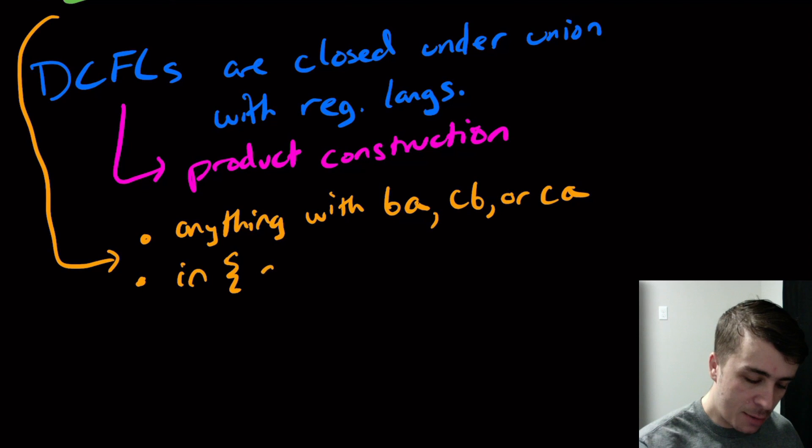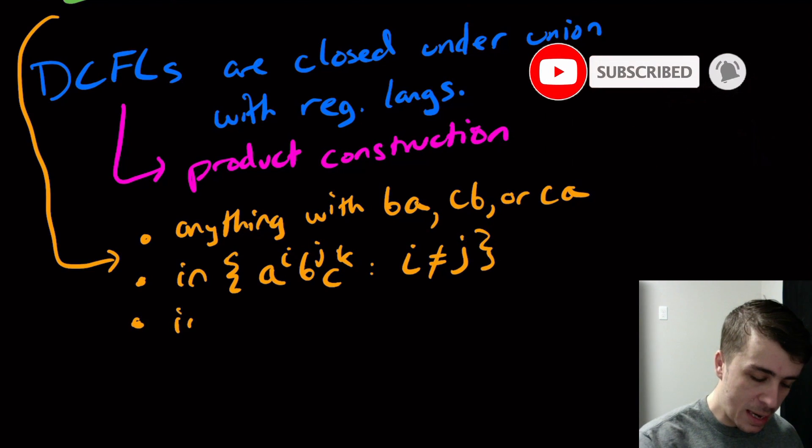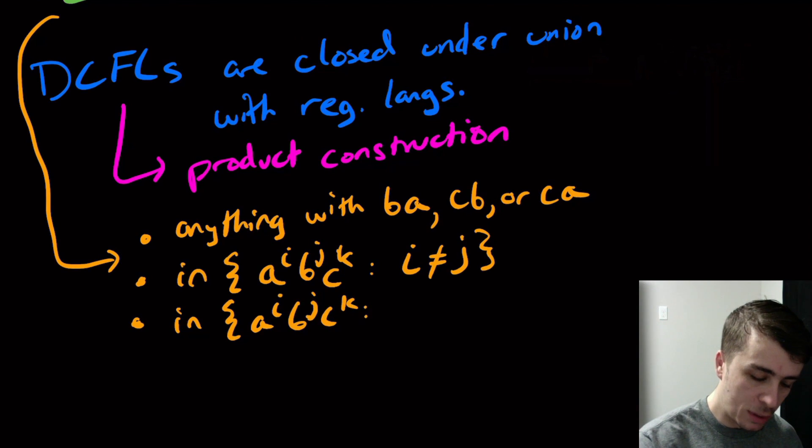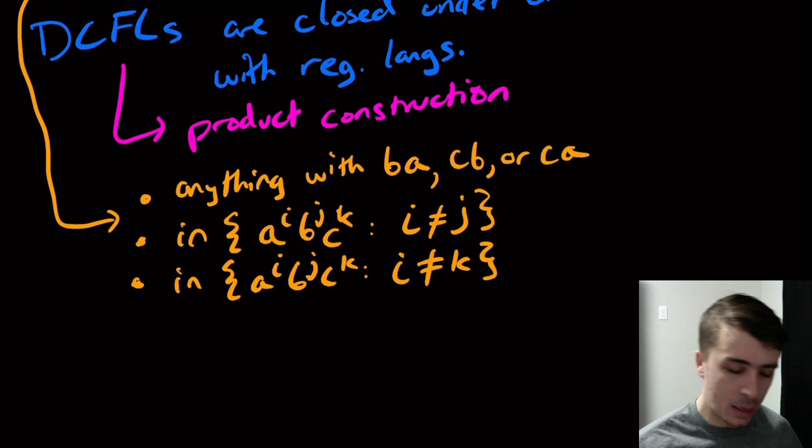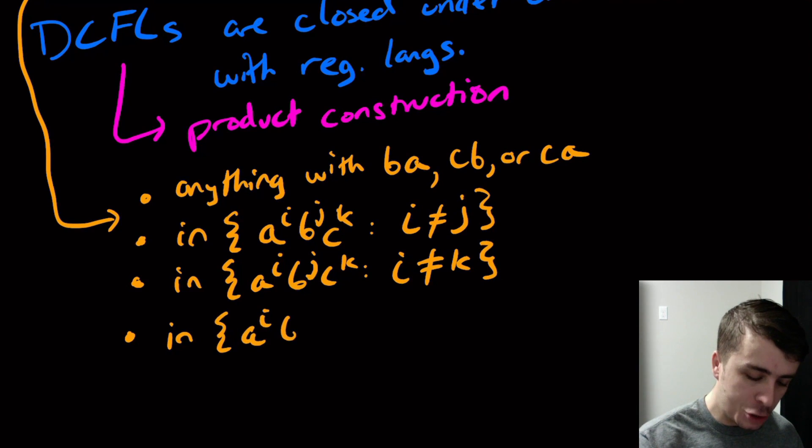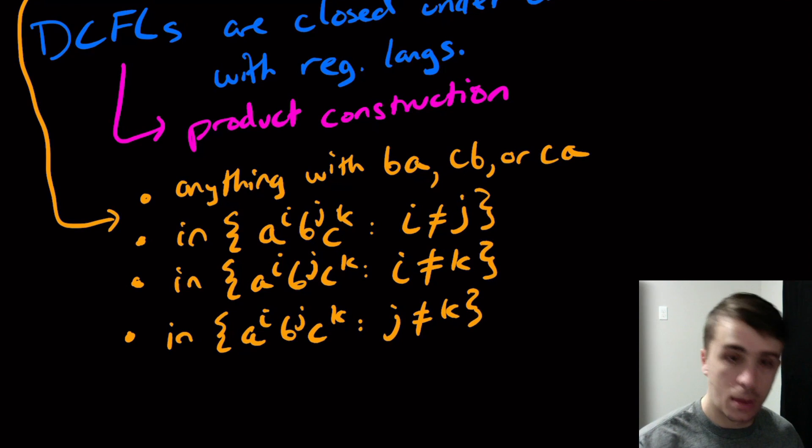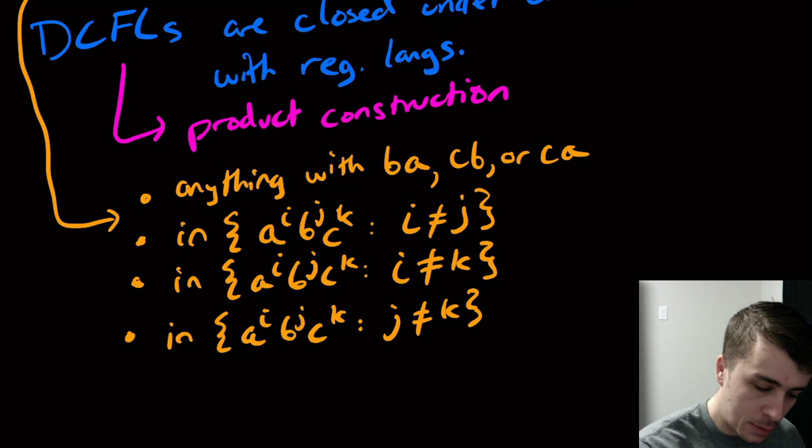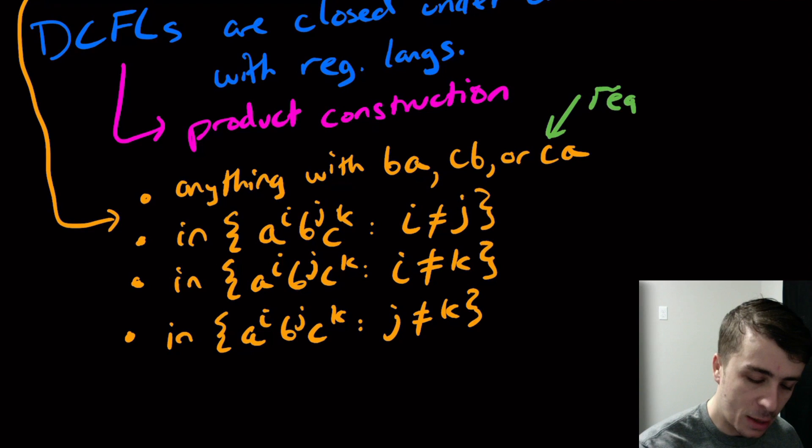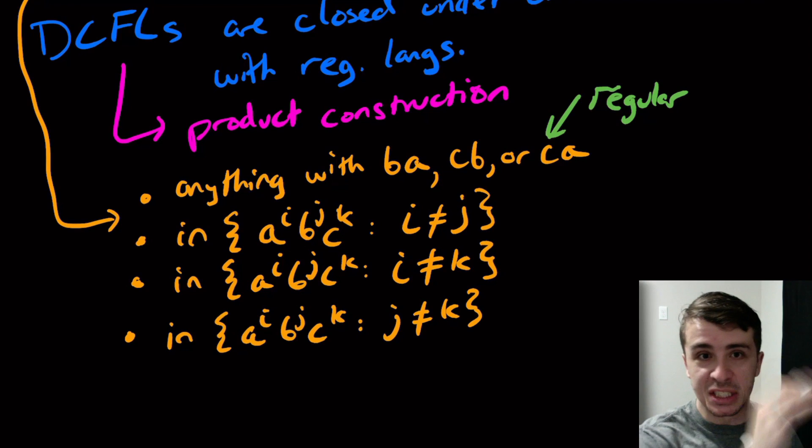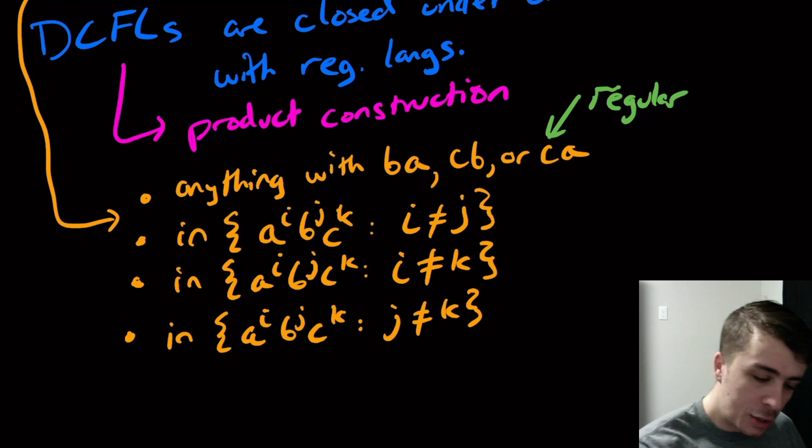So if we have A to the I, B to the J, C to the K, where I is not equal to J, then it must be in the complement. If we have very similar language, so exactly the same exponents, except now that we have I is not equal to K at the very end. The third variable here could be anything that you want it to be. And the third one is where we have the last two exponents not being the same. So J is not equal to K. What I mentioned before, actually I'll use green. So this language right here, any string that has one of those three substrings, this is regular. And you can represent it by a regex pretty quickly. So like sigma star BA, sigma star union, and then same thing for the other two substrings. So what I claim here is that these three languages right here are DCFLs.